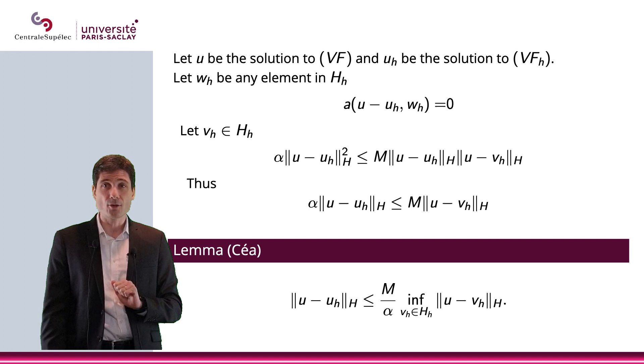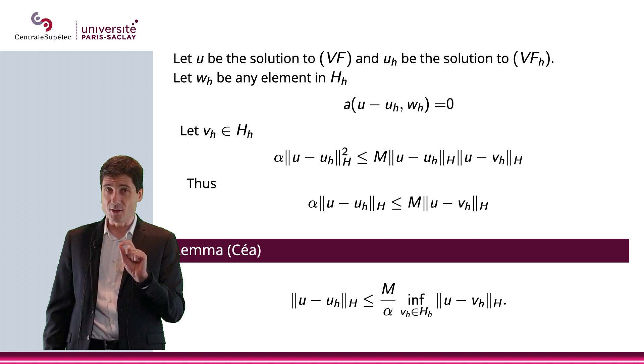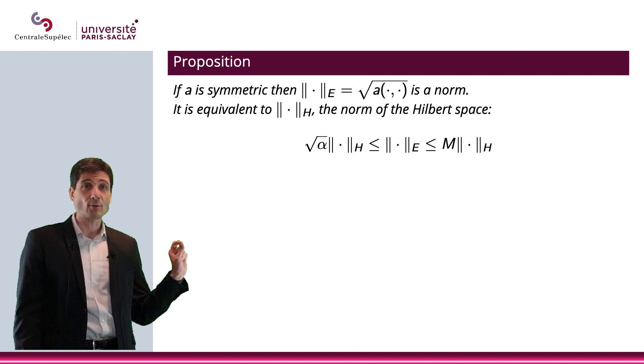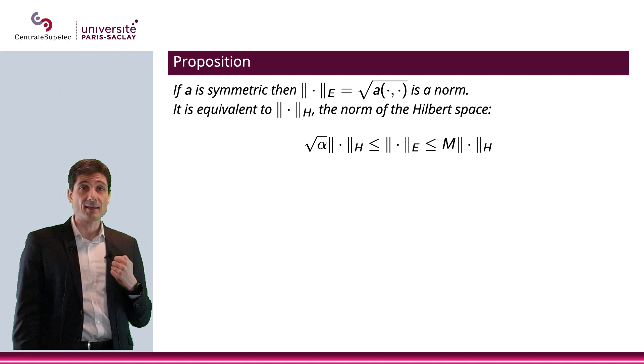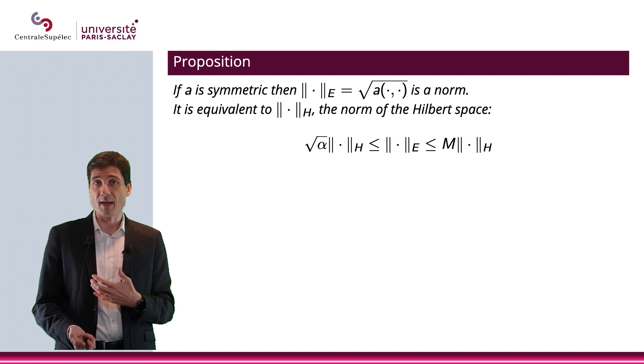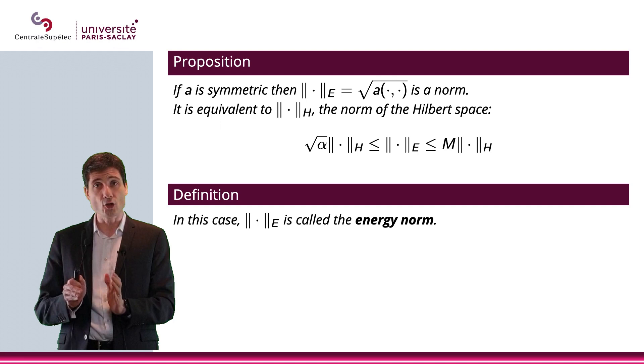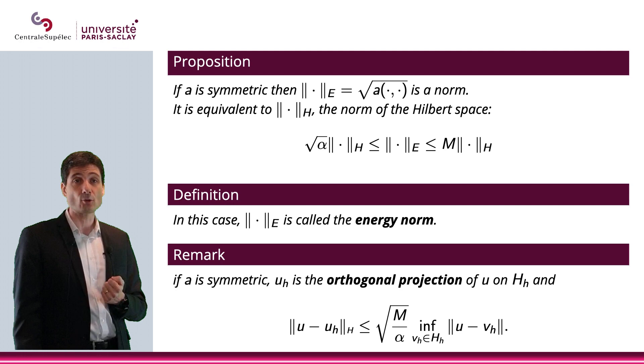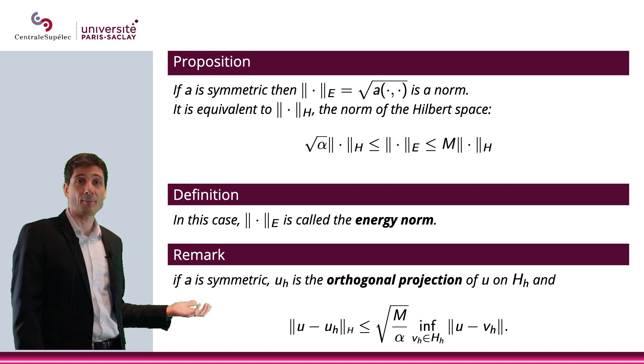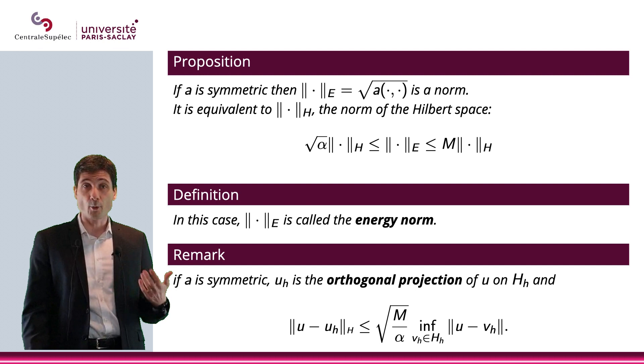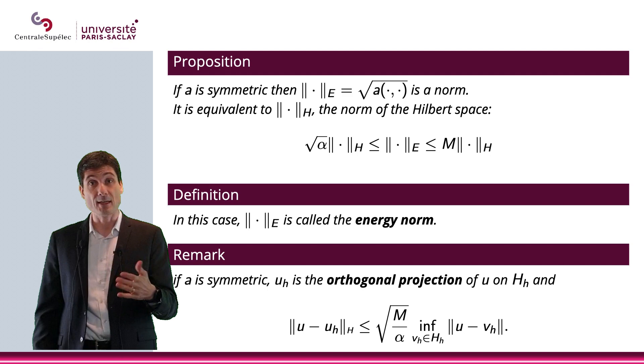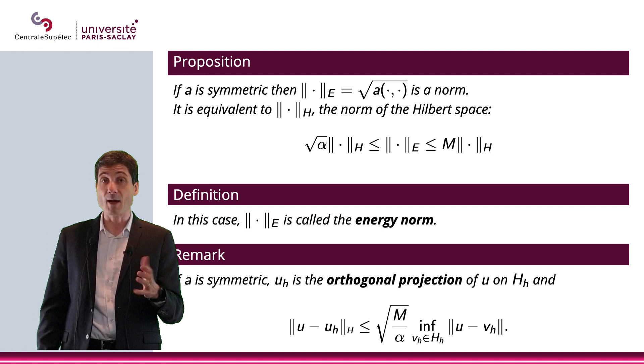Before we keep going, I would like to point out that if a, the bilinear form, is symmetric, then we have a little bit more because we can actually define a norm, which will be the square root of that bilinear form. And in this case, we have equivalence between this norm, the norm E, and the norm in the space H. And actually, this is called the energy norm. It is not necessarily the energy that comes from the physical system, by the way. But what we have is that in this case, we can actually use the orthogonal projection and show that rather than having M/α, we can actually have something that might be better, which is the square root of M/α. So that is if a is symmetric, but again, if we did not require a to be symmetric, the Céa's lemma works, even if a is not symmetric.